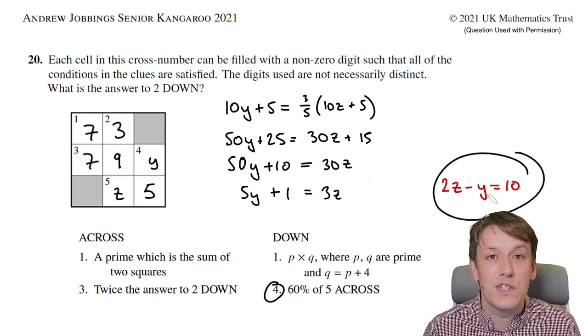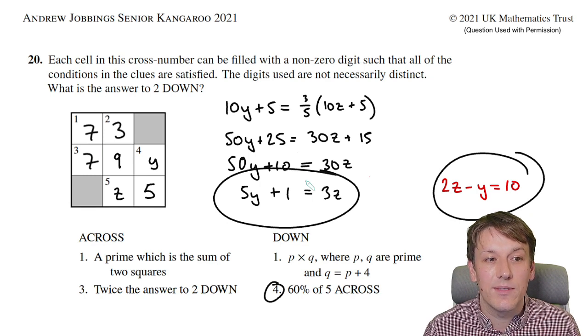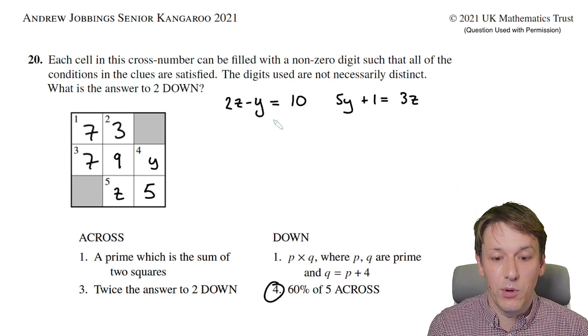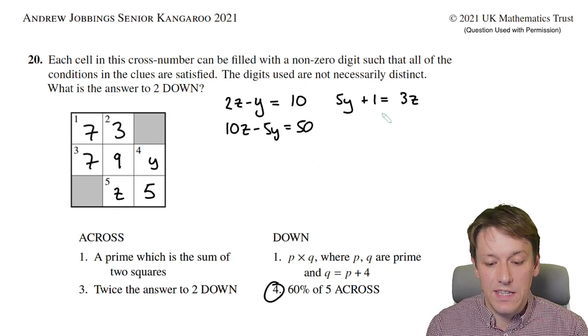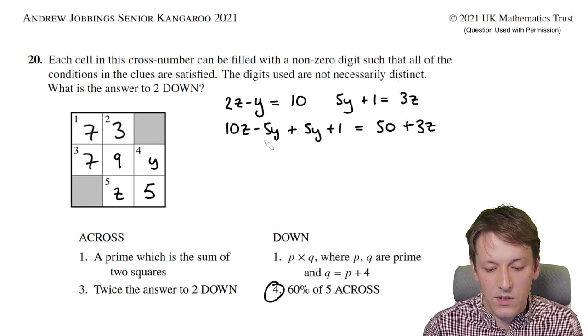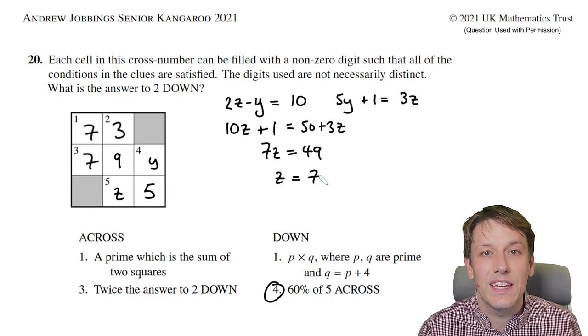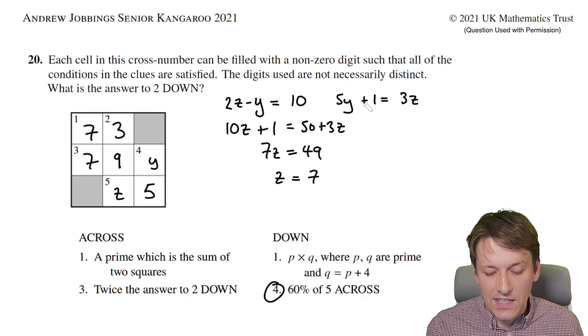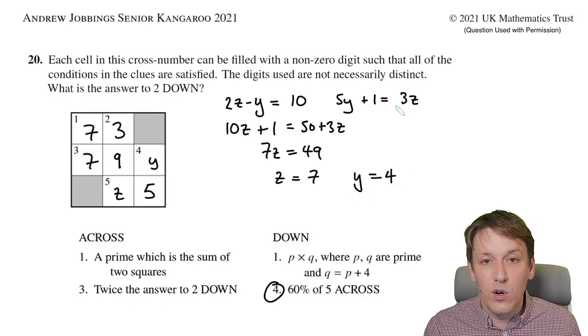We've got this equation for y and z as well, so we have a pair of simultaneous equations. You can solve these by any method. Let's multiply the first equation by 5: 10z minus 5y equals 50. Adding these two equations together, the 5y's cancel out, giving 7z equals 49, so z equals 7. Plugging that back into either original equation gives y equals 4.